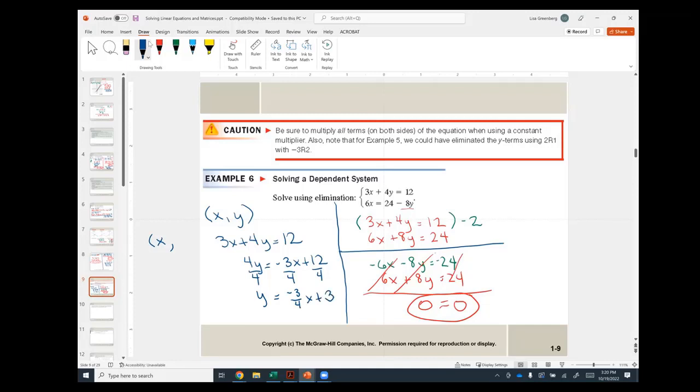So if I wanted to write an ordered pair like this, I would write x comma, let me do this here. I would write x comma minus 3 fourths x plus 3.